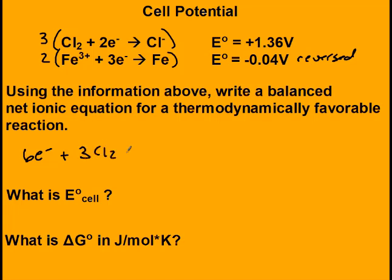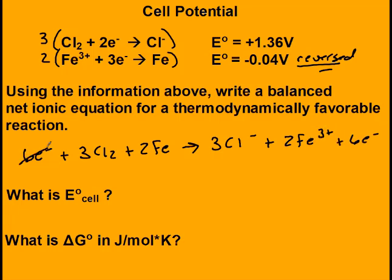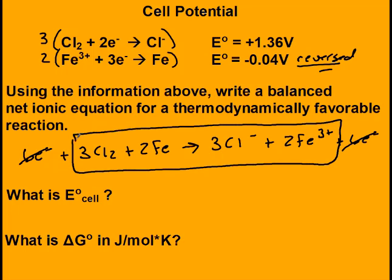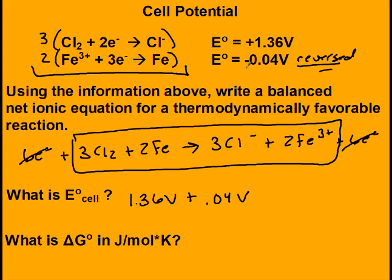So the balanced net ionic equation has the electrons removed. For E cell: 1.36 volts plus 0.04 volts. When you reverse an equation, the sign of E naught changes. When you multiply a reaction, E cell remains the same — so although the reactions were multiplied, the E cell values were not multiplied. Adding those together gives 1.40 volts.